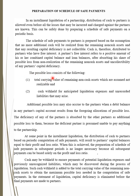The possible loss consists of the following. The first one is the carrying value of remaining non-cash assets — that is, the assets that have not yet been sold. The assumption is that this amount will not be realized. The other one is the cash withheld for anticipated liquidation expenses and unrecorded liabilities that may arise. Some cash is withheld because during liquidation there will be some expenses that will be incurred during the process.